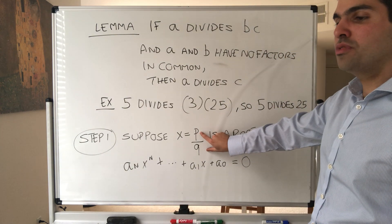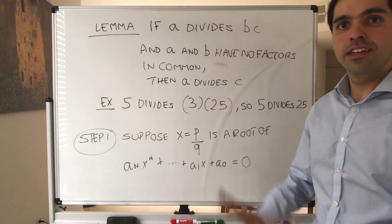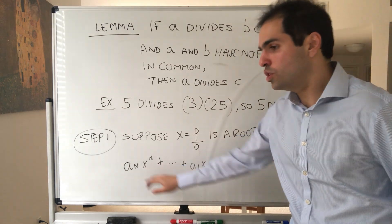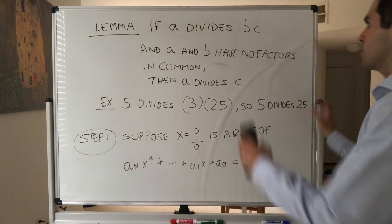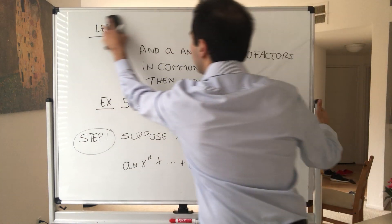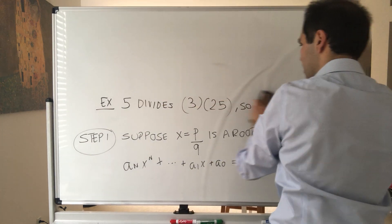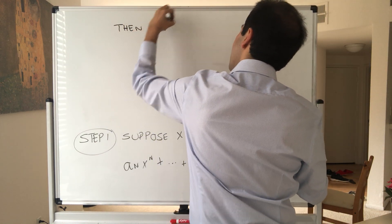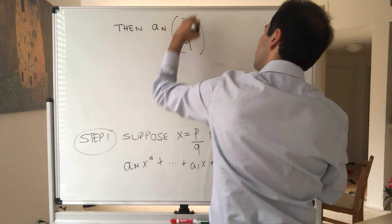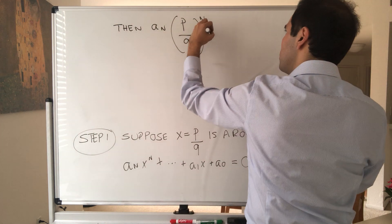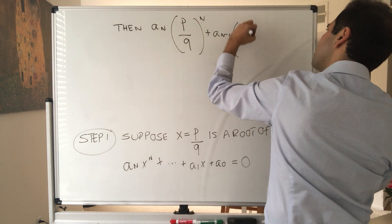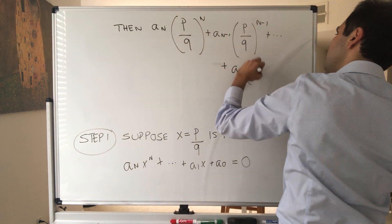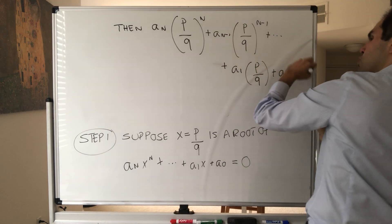Where again, very important, we'll use that later: P and Q have no factors in common. That was one of the statements of the theorem. And then all you have to do is plug in P over Q in your root. So then what do we have?